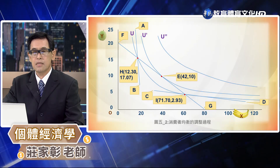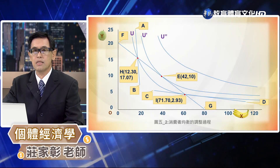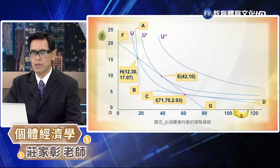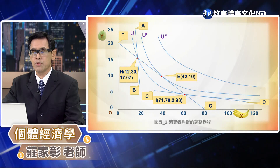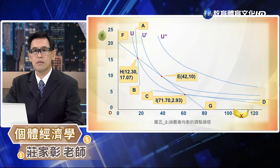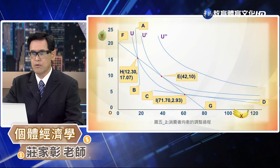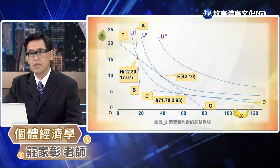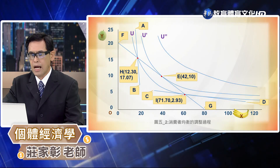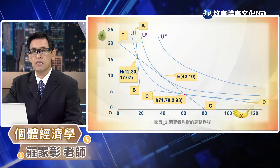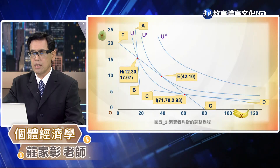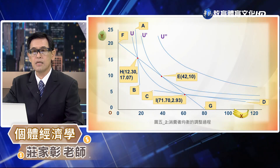在 H 點上，消費者主觀上愿意交換的比例跟客觀上的價格比並不相同，我們可以看到主觀上它的斜率是比較陡的，客觀上是比較平緩的，因此它並不是一個均衡的消費組合點。在 H 上面的消費者一直會往 E 這個均衡點來移動。同樣的在 I 點，主觀的邊際效用比值跟客觀的價格比並不相同，因此 H 跟 I 這兩個都不是均衡點。